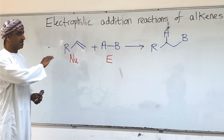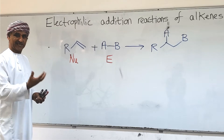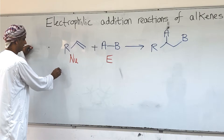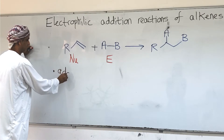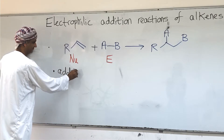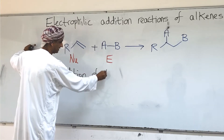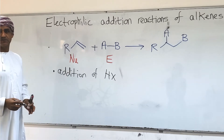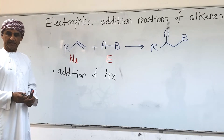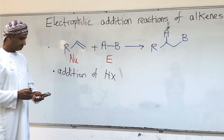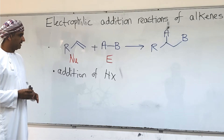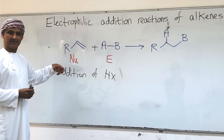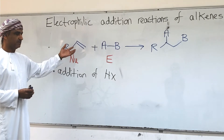This is a general representation. Now we will take examples, beginning with addition of HX — addition of a halogen acid, where X is a halogen, so HX could be HCl or HBr. We can think of this reaction based on the general representation.